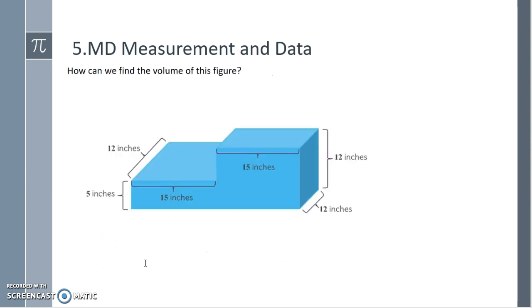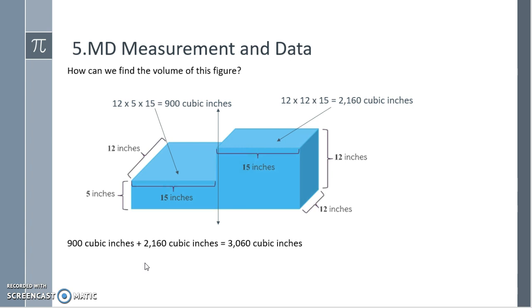How can we find the volume of this irregular figure? Well, notice if I split it down the middle here, I have two right rectangular prisms that we know how to find the volume of each. So looking at the one on the left, I can take 12 times 5 times 15 for 900 cubic inches. I can find the right rectangular prism on the right by taking 12 times 12 times 15 for 2,160 cubic inches. All together then, I have 900 plus 2,160 for a total of 3,060 cubic inches for this irregular figure.